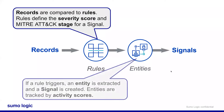The entity in a signal — what is that? Specifically, in a signal we're talking about something like an IP address, a MAC address, a hostname. The entity tells us who or what was involved in the event that the record described. Entities are extracted from records — every signal has an entity. The entity's activity score is the sum of all the severity scores of all the signals it appears in.